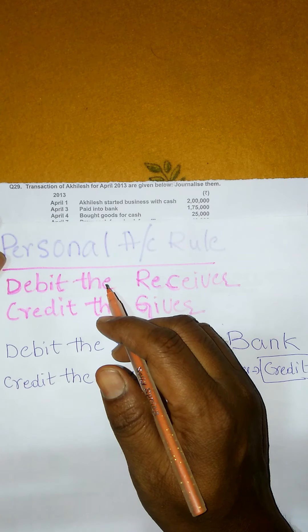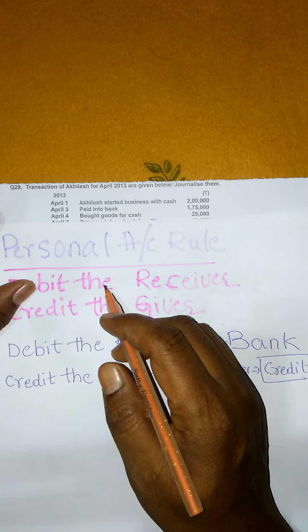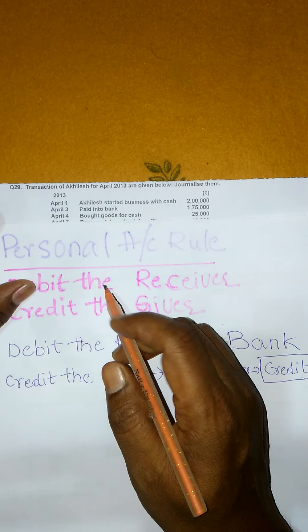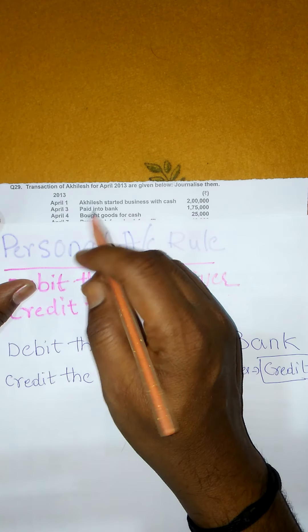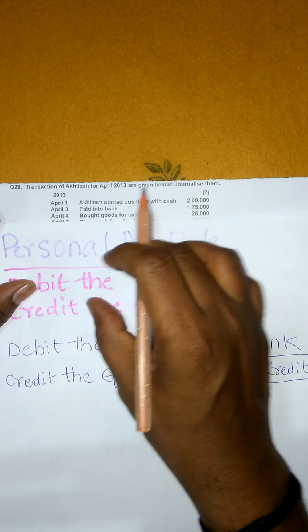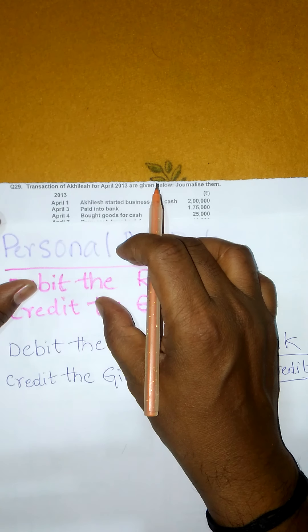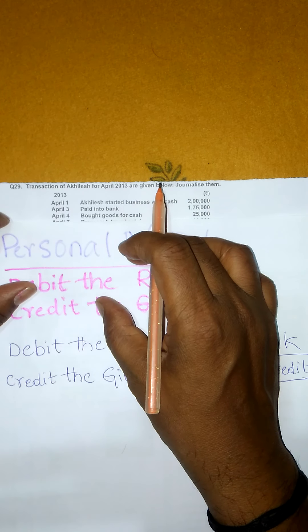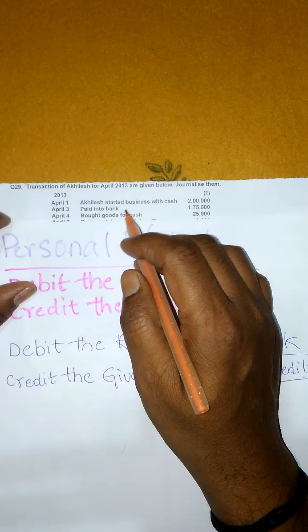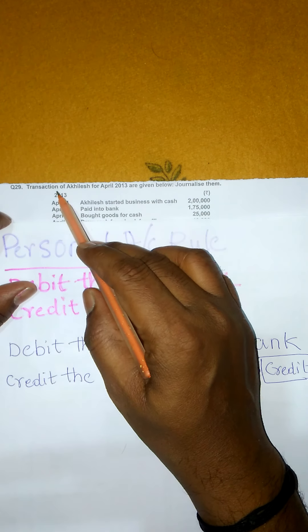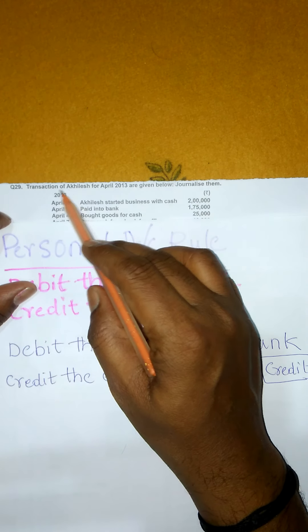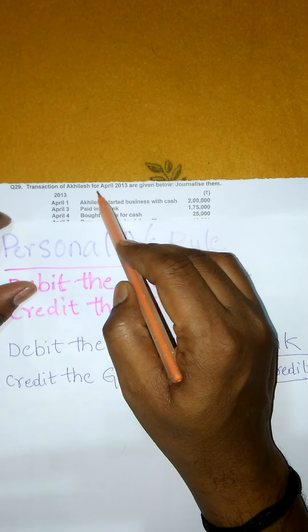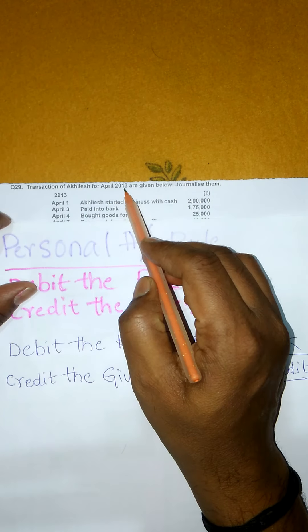Hi everyone. Ee roju manamu journalizing choosdamu. Previous video lo manamu discount allowed, discount received transaction choosdamu. Ee roju manamu journalizing choosdamu. Transactions of Achillesh for April 2013 are given below — journalize them.